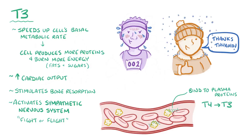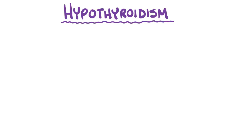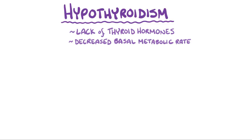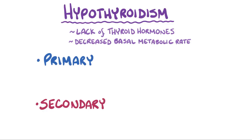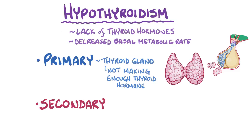Hypothyroidism can happen a few different ways, and all of them result in a lack of thyroid hormones and a decreased basal metabolic rate, where cellular reactions are happening slower than normal. There are two types: primary and secondary. In primary hypothyroidism, the thyroid gland isn't making enough thyroid hormones. Not only is there a lack of T3 and T4, but there are increased levels of TSH from the pituitary trying to stimulate the gland.